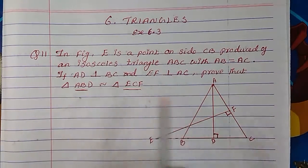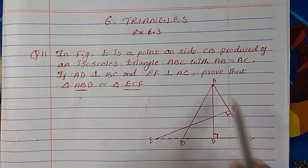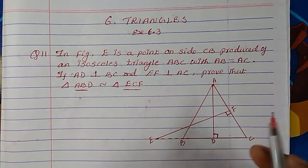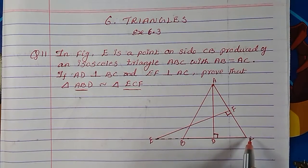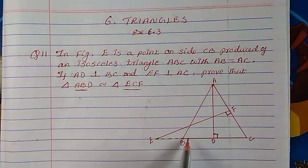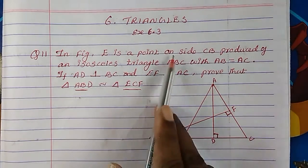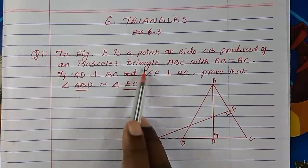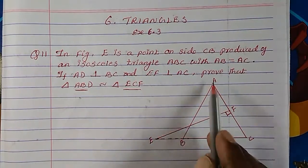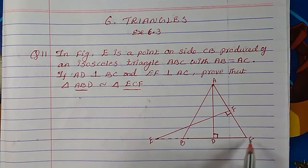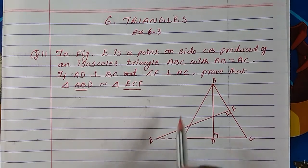So, whatever information is given is already there in the figure. E is a point on side CB. CB is here, so E is a point on side CB produced of an isosceles triangle ABC, where CB is produced.